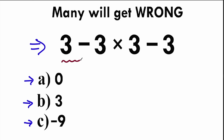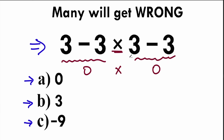They say okay, right here from left to right, three minus three equal to zero. Right here three minus three equal to zero. So we have zero times zero — we have this multiplication in the middle. So zero times zero equals zero. So a lot of students might be saying zero is a correct answer.